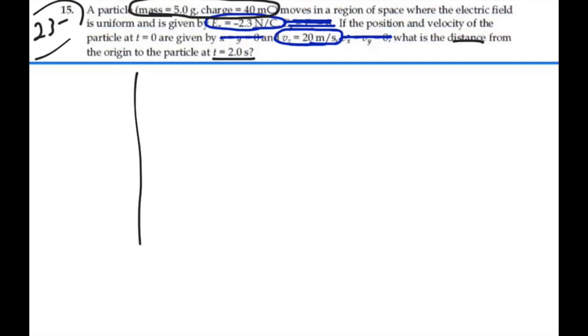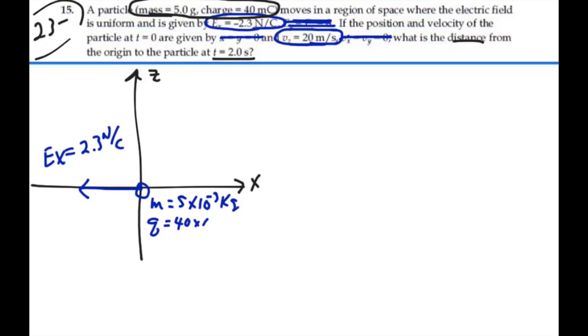So let's look at the XZ plane. Our E field is in the negative x direction with value 2.3 N/C. We have a particle, 5 grams, charge 40 mC, and we have an initial velocity in the z direction equal to 20 meters per second.